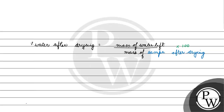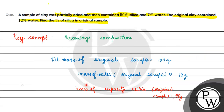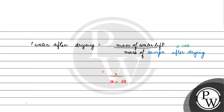Into 100. Mass of water left is x, divided by mass of sample after drying. If the sample is dried, water evaporates. So mass of water changes, but mass of impurity plus silica remains the same at 88 grams. The mass of sample after drying equals x plus 88. So the formula is x divided by (x plus 88), into 100.